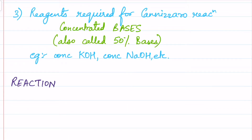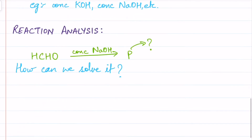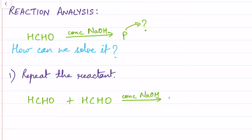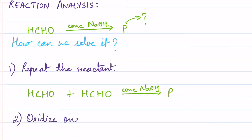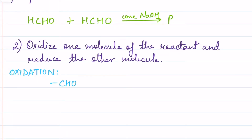Now we move on to the reaction analysis. The kind of question you usually get is: HCHO in the presence of concentrated KOH or NaOH gives what product? Step one: repeat the reactant — write the reactant molecule twice. Step two: out of these two molecules of the reactants, we'll oxidize one molecule and reduce the other. First, we carry out the oxidation. Whenever the CHO group (the aldehyde group) oxidizes, you get an acid.